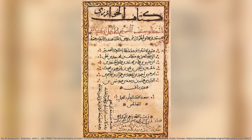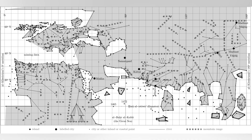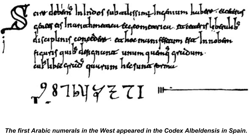When Arabic numerals reached Europe in the 10th century, they encountered substantial resistance. Religious authorities viewed them with suspicion due to their Islamic association. Practical objections arose too.